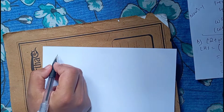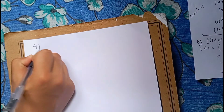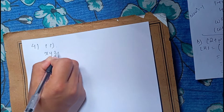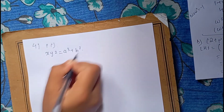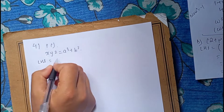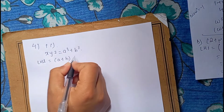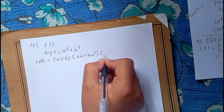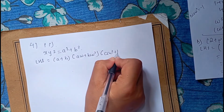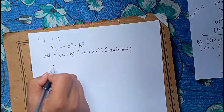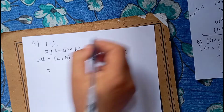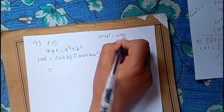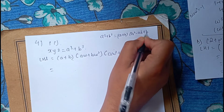Now we have to write part II. Part II is equal to a cubed plus b cubed. We have x equal to a plus b, y equal to a·omega plus b·omega squared, z equal to a·omega squared plus b·omega. We have to write a cubed plus b cubed as a plus b times a squared minus ab plus b squared.